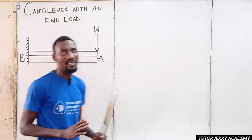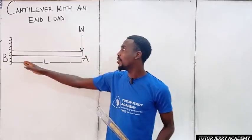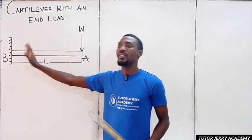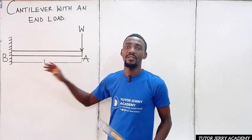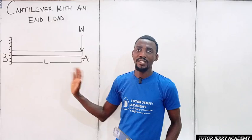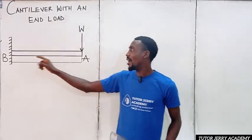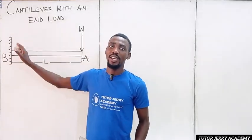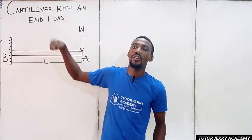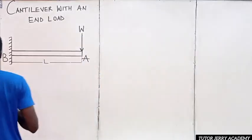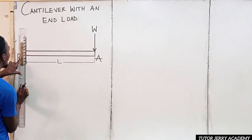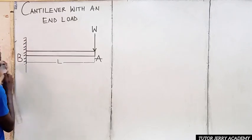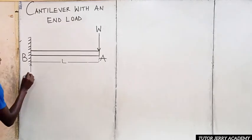For a fixed support like this, to draw the free body diagram we need to consider that there is no upward or downward movement and there is no rotation. So we are going to have an upward reaction, a reaction in the horizontal direction, and we are also going to have a moment. However, we are going to be neglecting the reaction in the horizontal direction.